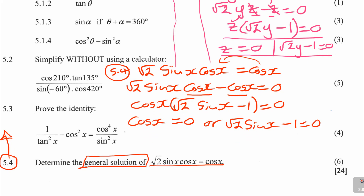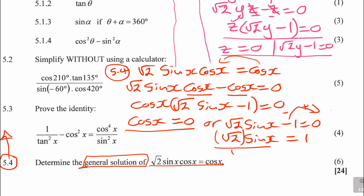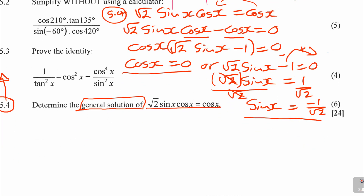This one is already done, but here you need to do a little bit. Take negative 1 to the other side: square root of 2 sine x is equal to 1. Then divide by square root of 2 on both sides, so sine x is equal to 1 over square root of 2. I'll say 2 marks for this — they'll give you 2 marks; if they give you 3, it was a bonus.